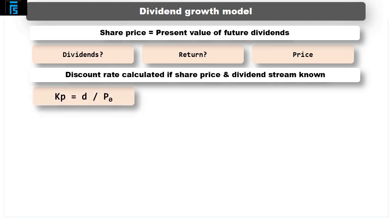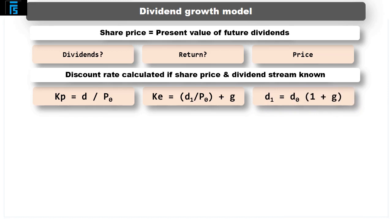For preference shares, the cost of preference shares KP equals the dividend D divided by the current share price P0. For equity shares, the cost of equity KE equals the dividend in one year's time D1, divided by the share price P0, plus G — the percentage growth in dividends per annum expressed as a decimal. D1 can also be shown as D0 multiplied by 1 plus G, the current dividend increased by a year's worth of growth. The slight difference between the formulae for preference and equity shares is simply because the preference dividend is a fixed percentage and doesn't grow.